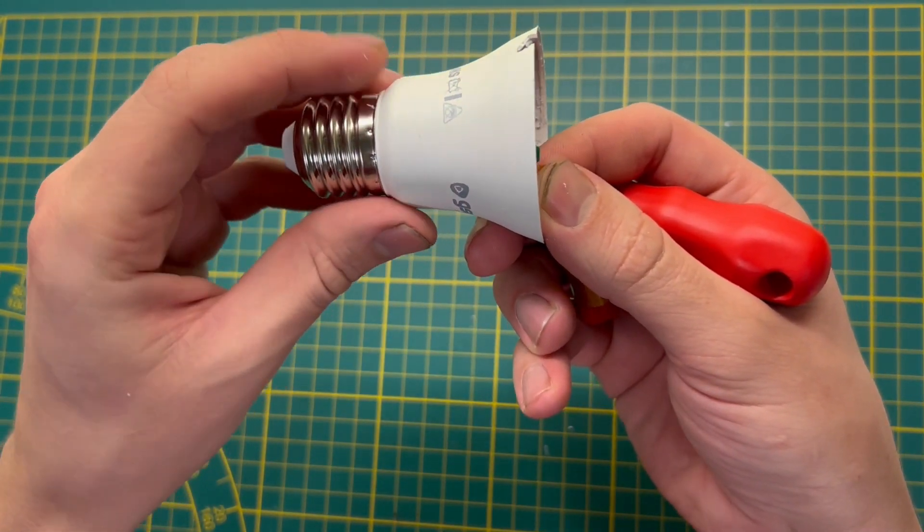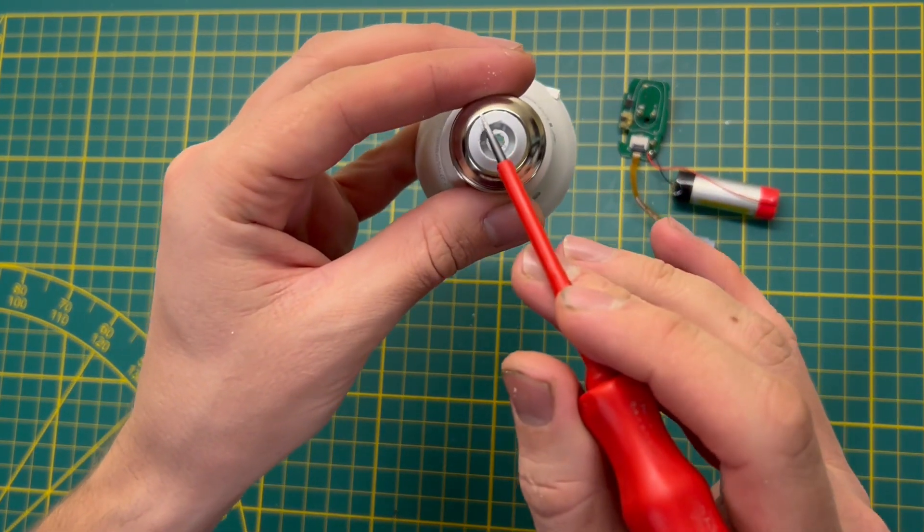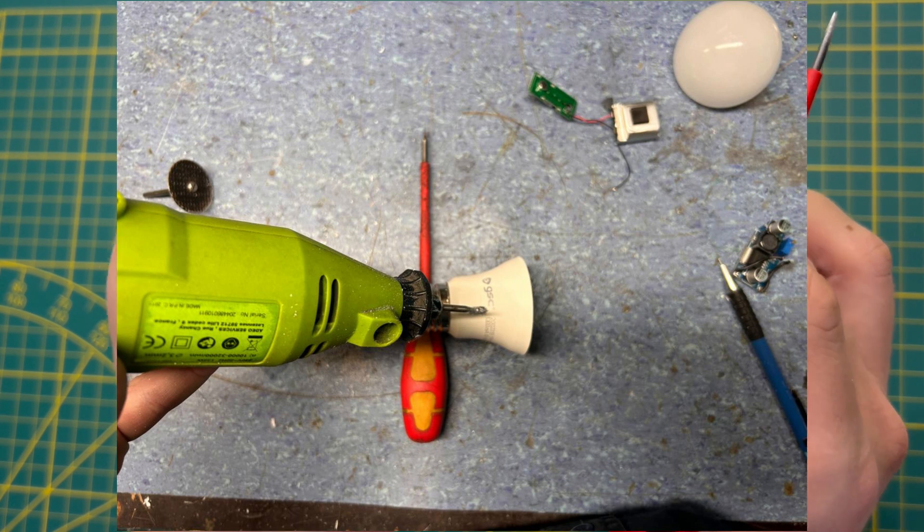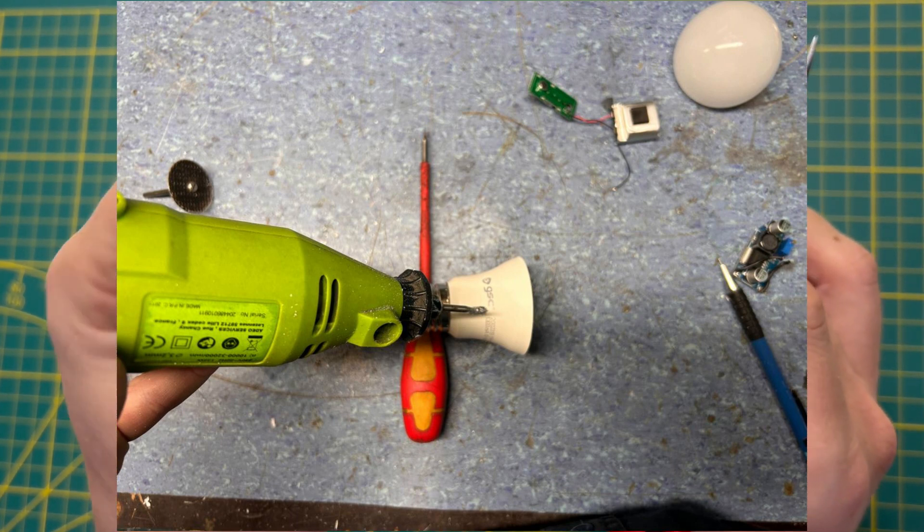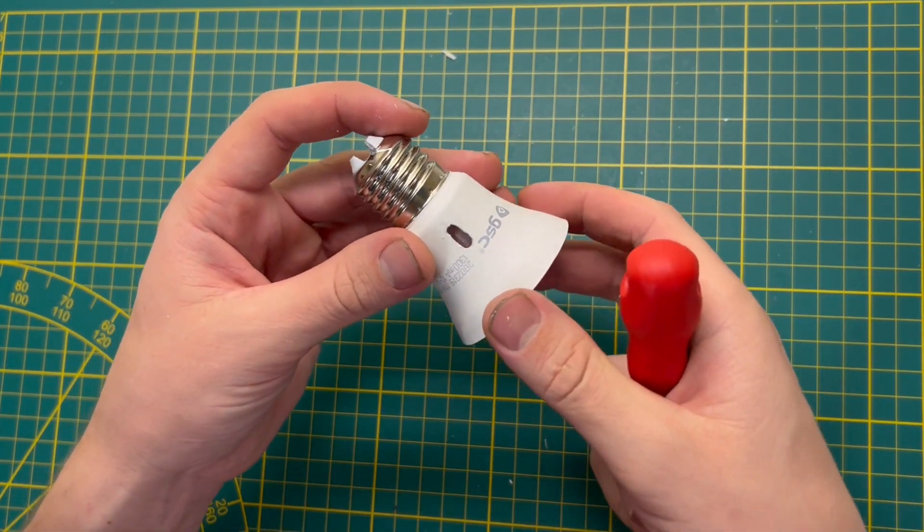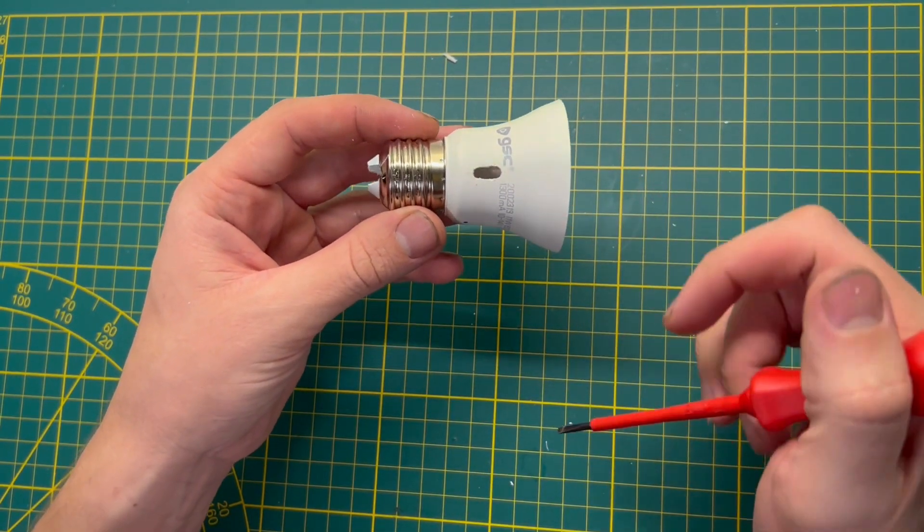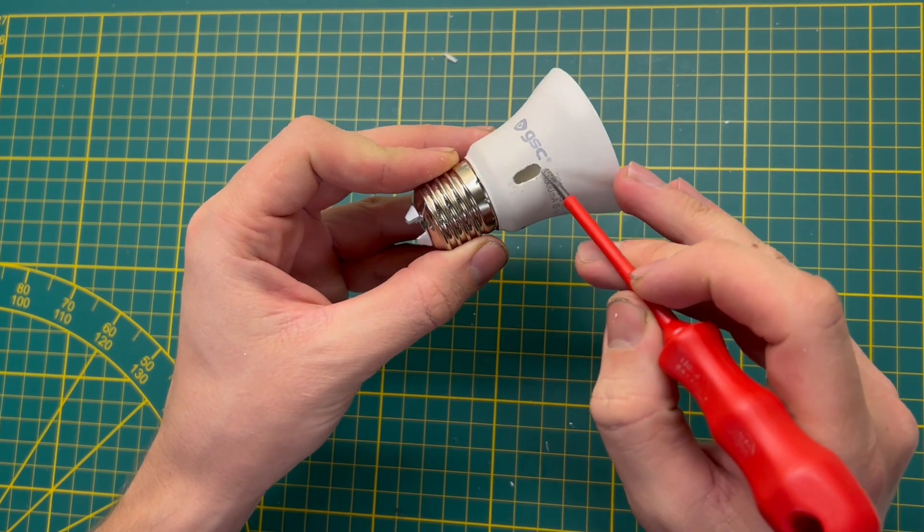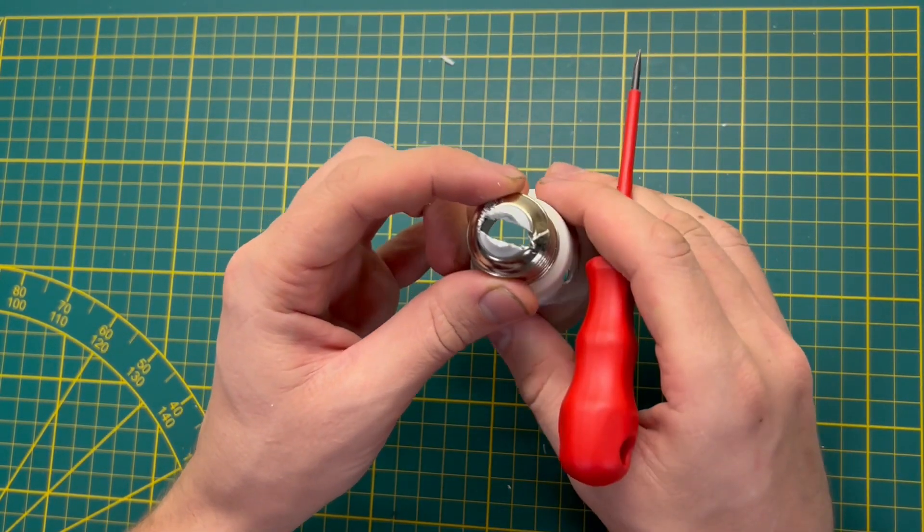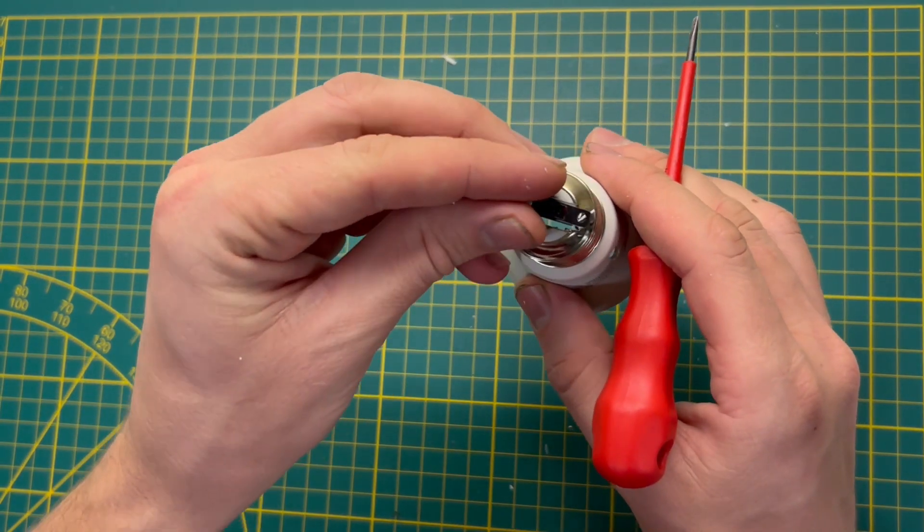We will mount this board inside. It will be like this and the connector will be here outside. Also from the back side we need to make a bigger hole to install a small switch over here.